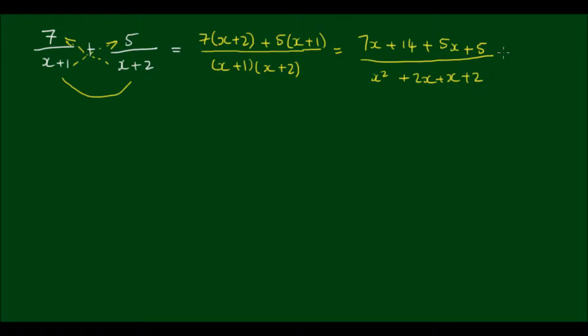And this would simplify to 12x plus 19 divided by x squared plus 3x plus 2.